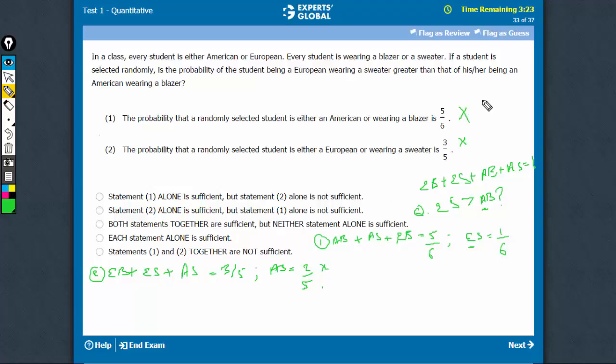On combining, however, statement 1 gives me ES (European wearing sweater), and statement 2 gives me Americans wearing blazer. So, 2 by 5 and 1 by 6, we can compare and find out the answer. Combining works, you get a unique answer. Don't have to worry about comparing. Save time. Answer is option C.